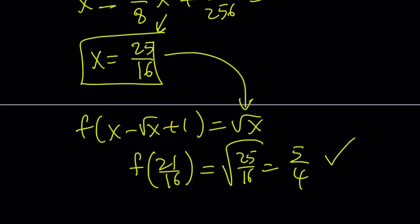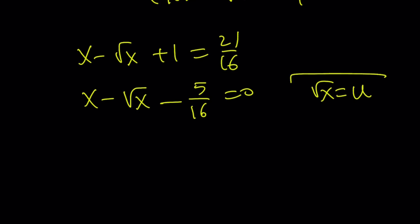Now, here's another approach for finding x here. So once we get x minus square root of x plus 1 equals 21 over 16, you can set square root of x equals u and then you'll get a quadratic, but then you have to pick the u value that is positive. Make sense? Same idea.